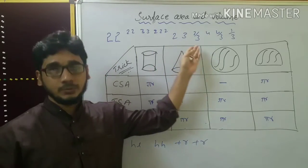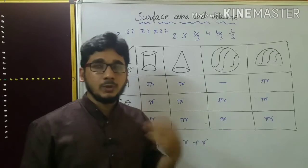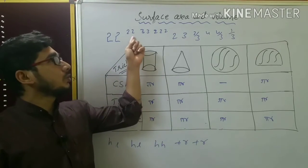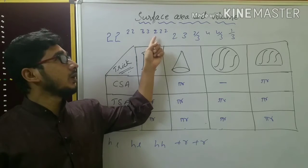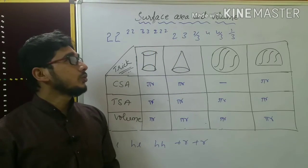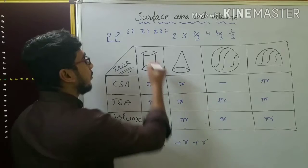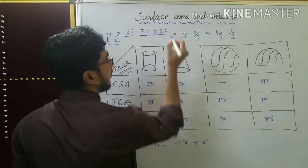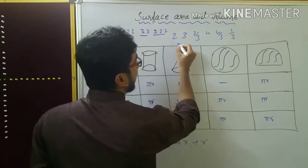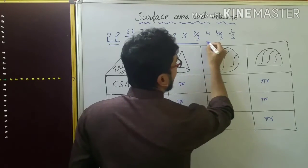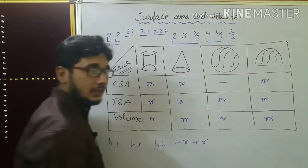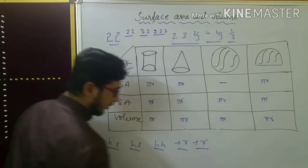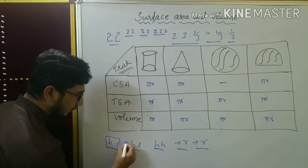Now this is the maths poem for surface area and volume formulas. You have to remember it. Repeat with me: two, two, square, square, cube, cube, square, square, square, two, three, two by three, four, four by three, one by three, h, l, h, l, h, h plus r, plus r. This is the flow you have to remember.